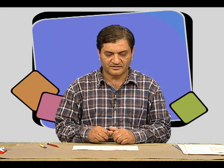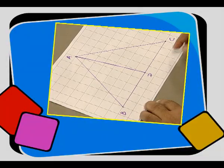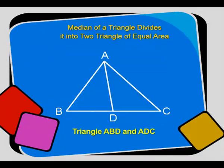Children, what do you observe? The median of a triangle divides it into two triangles, namely ABD and ADC. Next, we find the areas of these two triangles by counting the squares.